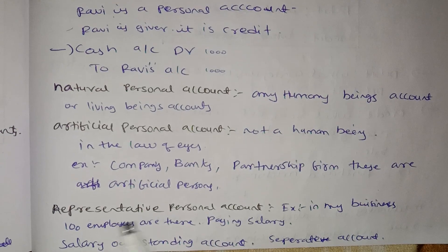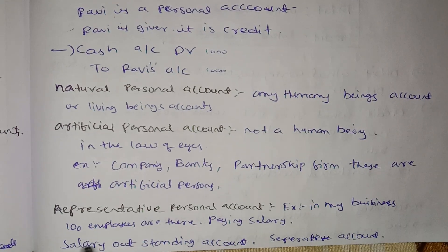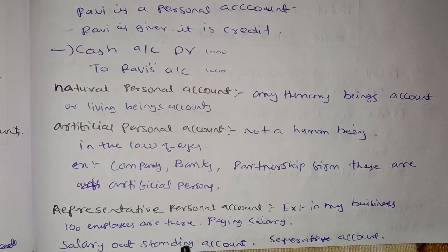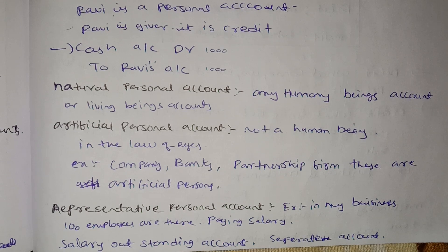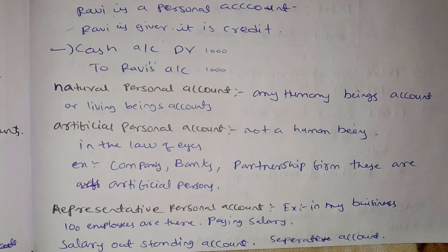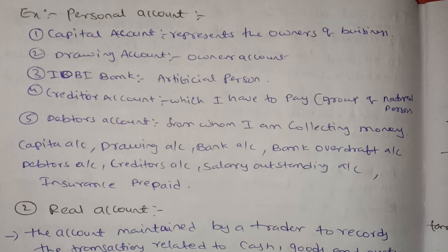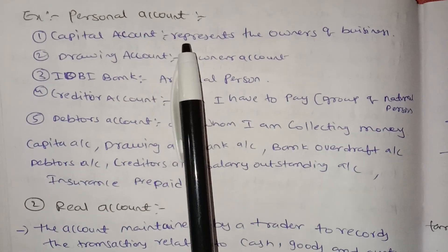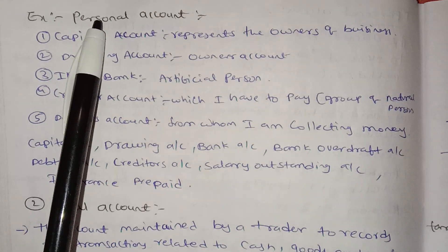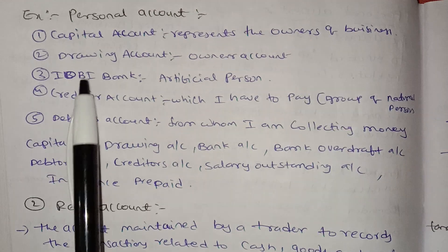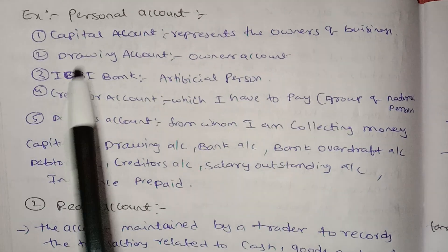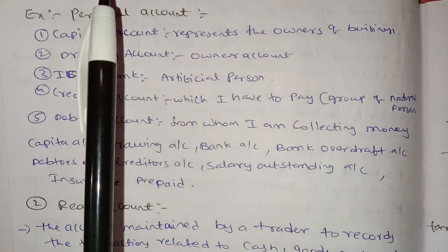Next is the representative personal account. In my business there are 100 employees and we are paying salaries, so we have an outstanding salary account. For example, a capital account represents the owners of a business. Drawing account is the owner's account. These are all personal accounts.